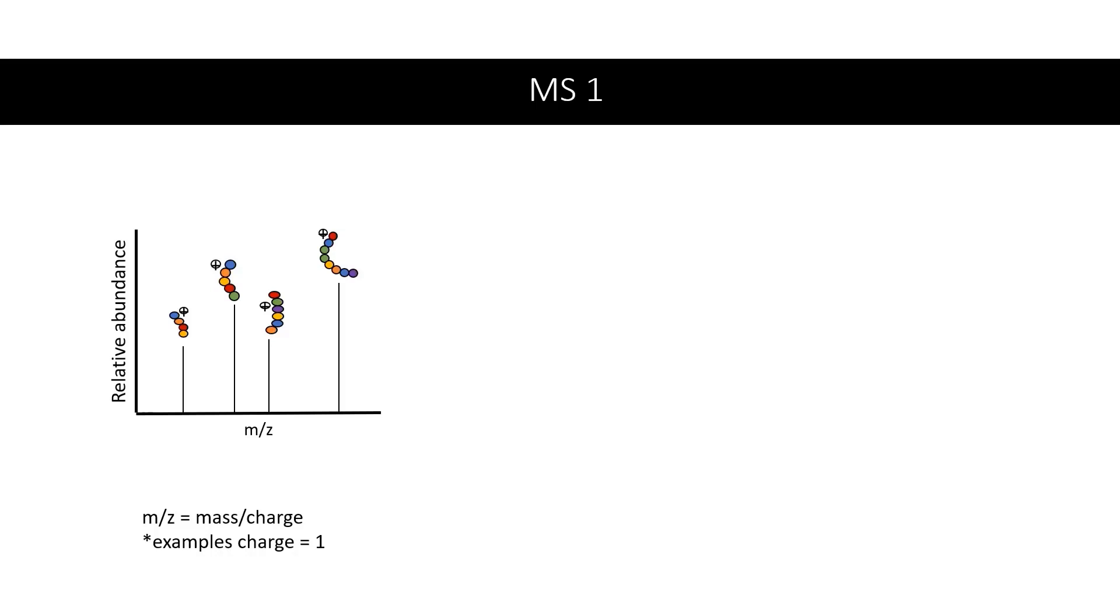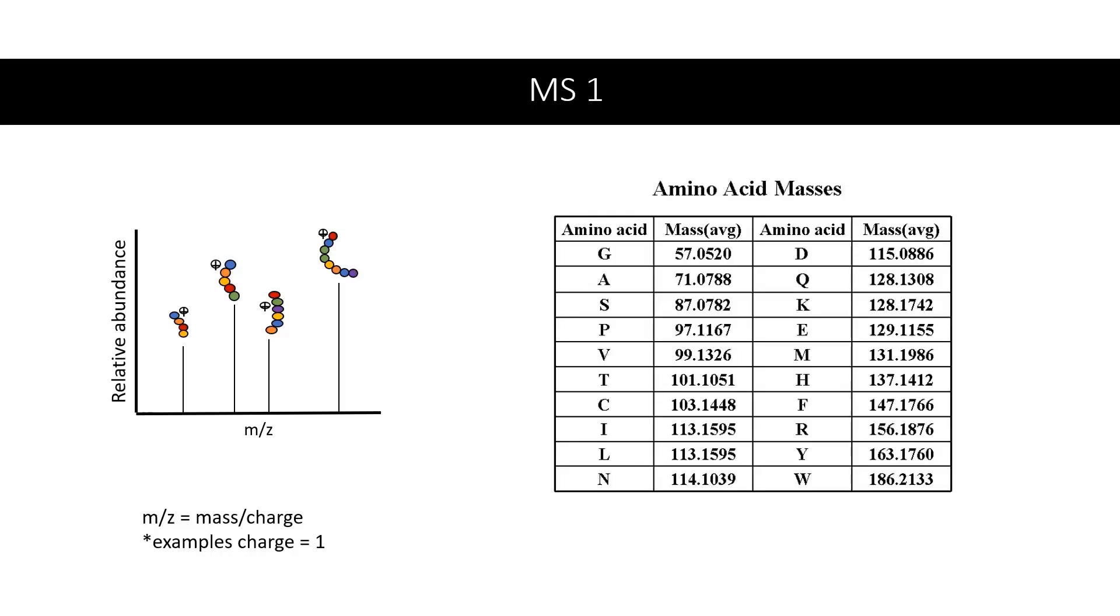So how is the mass-to-charge ratio helpful? Well, each amino acid has a unique mass associated with it, given in Daltons. Therefore, if we know the overall mass of the peptide, it gives us some idea of which amino acids are combined to make the peptide of that specific weight.